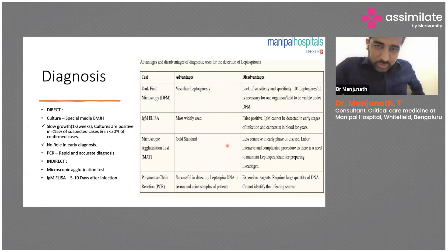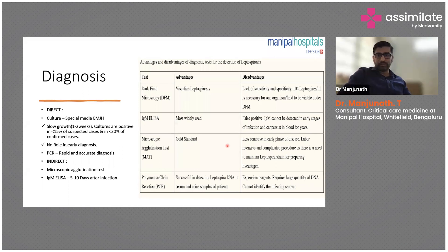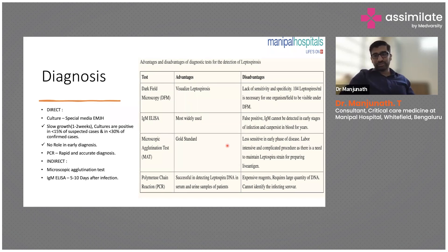We often miss the diagnosis because patients come to us very late. Dark field microscopy, which we read about in second-year MBBS, lacks sensitivity and specificity — at least 10,000 leptospira must be present in 1 mL of blood to be visualized, which is not practical. IgM ELISA is most widely used but has many false positives because other diseases also produce IgM antibodies.